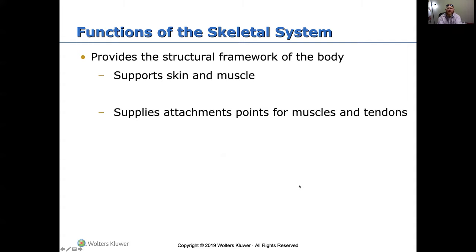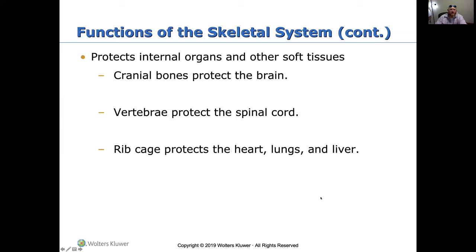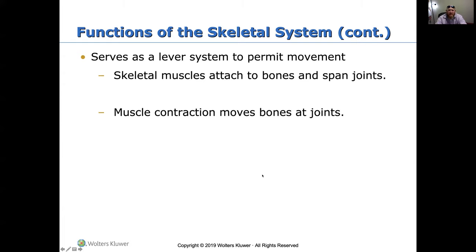The functions of the skeletal system: it gives a structural framework to the body — without it, we'd just be a blob of muscle, skin, and organs. It supports skin and muscle, and supplies attachment points for muscles and tendons, which allow movement. It also protects internal organs and soft tissues — cranial bones protect the brain, vertebrae protect the spinal cord, and the rib cage protects the heart, lungs, and liver. It serves as a lever system to permit movement, with skeletal muscles attached to bones on each side of joints.